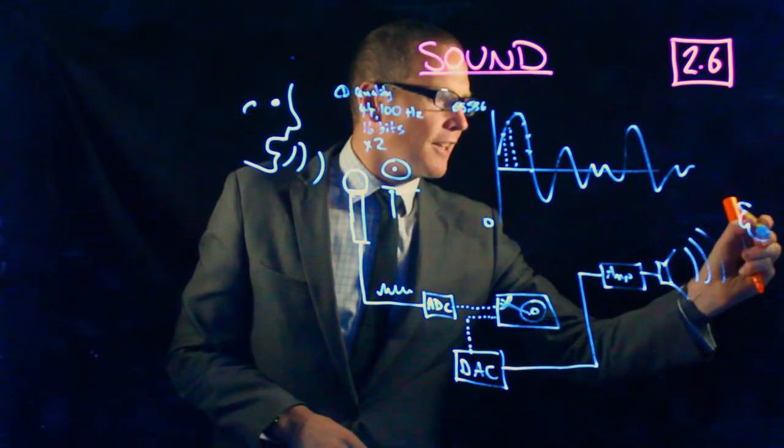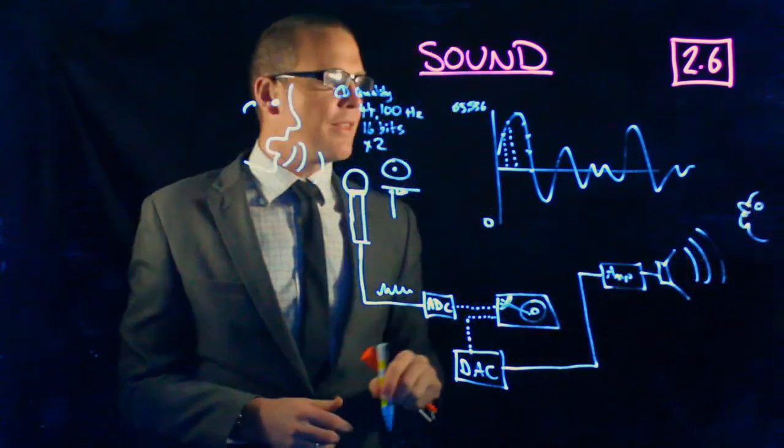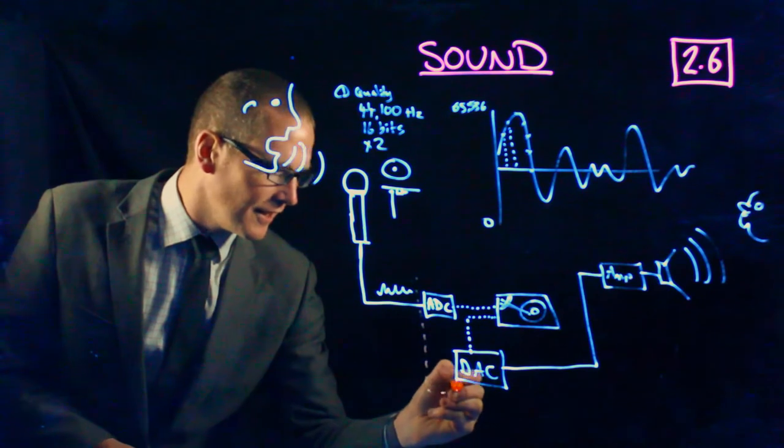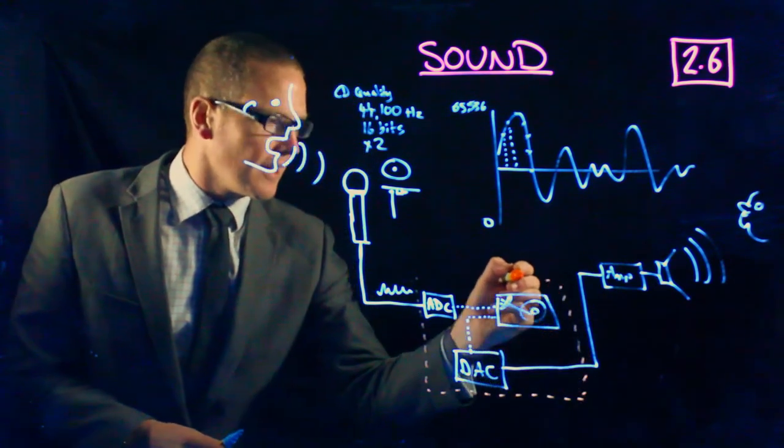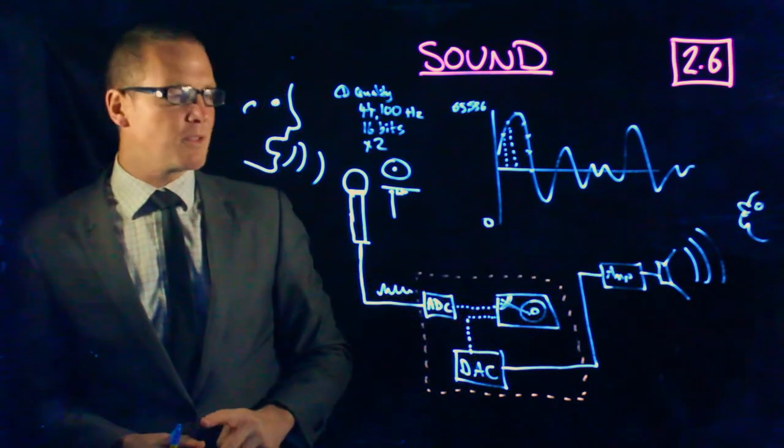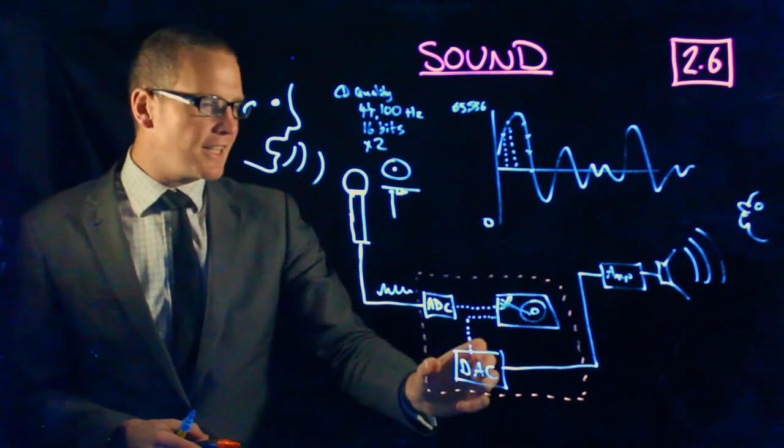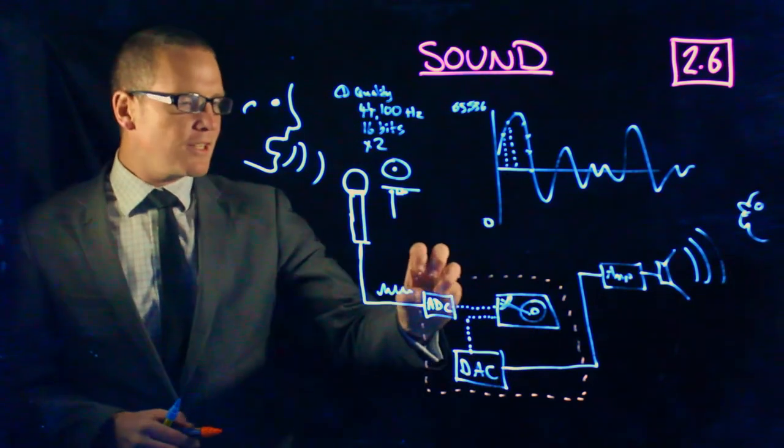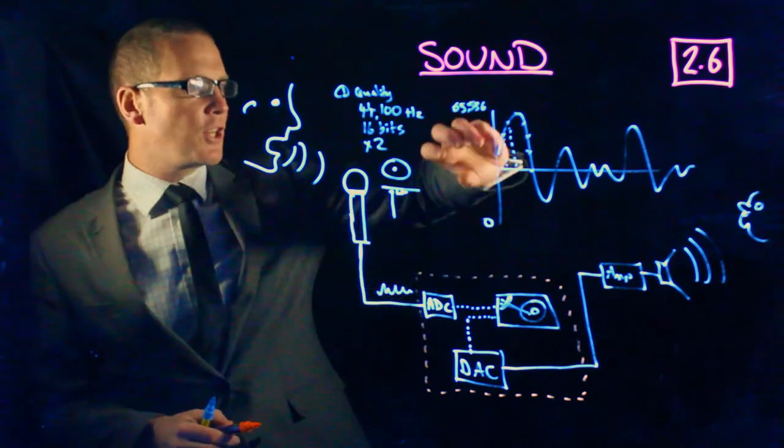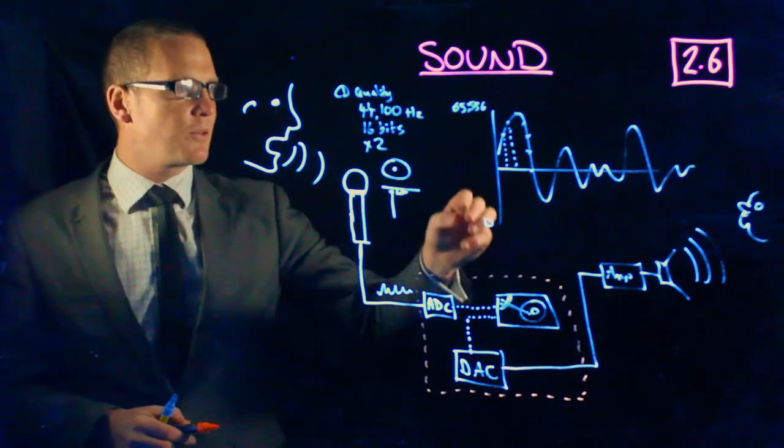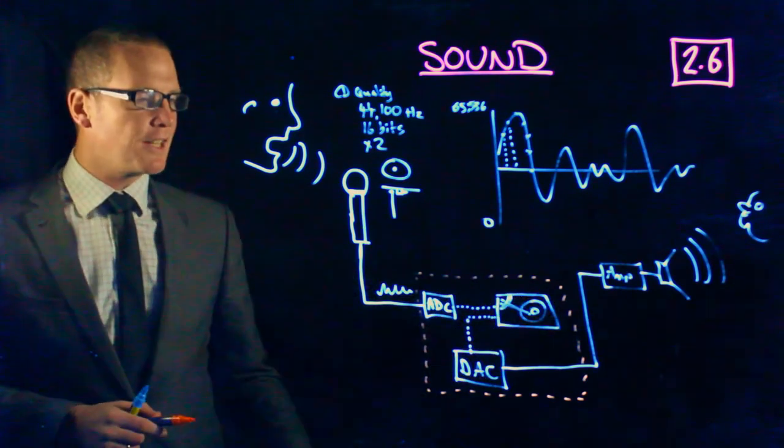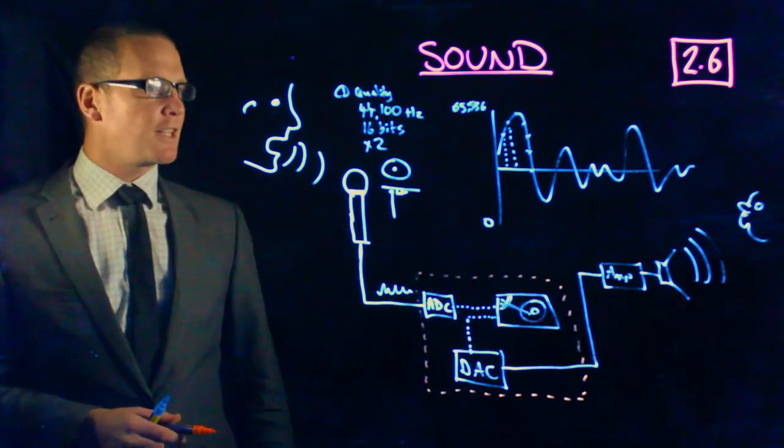All of this happens inside a computer. It doesn't look like that in terms of layout. The ADC and DAC these days are usually on the motherboard, but these are chips whose specific job is to measure analog wave signals, find those data points, and rebuild analog wave signals from data points.